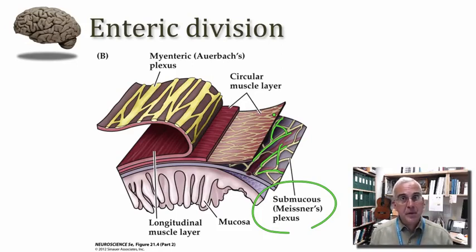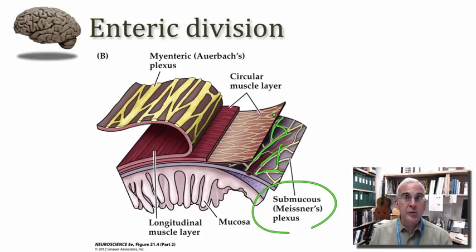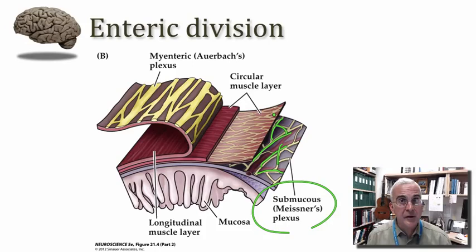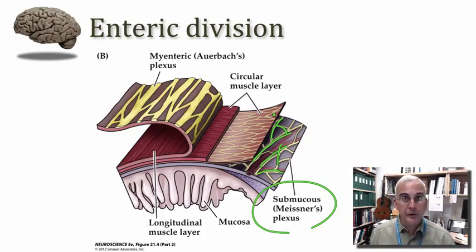That's all I'm going to say about the GI system, though there is certainly a rich degree of neurobiology associated with the neurons in these networks. We'll turn our attention to the sympathetic and parasympathetic divisions and the means by which the brain regulates these two sets of outflows from visceral motor centers within the brainstem and spinal cord.